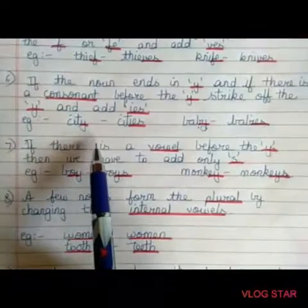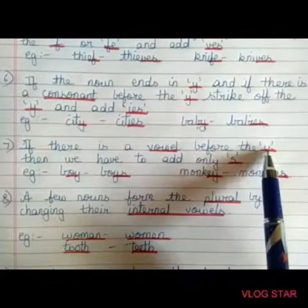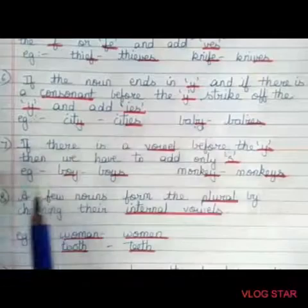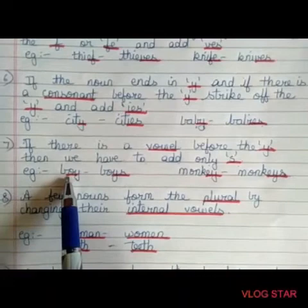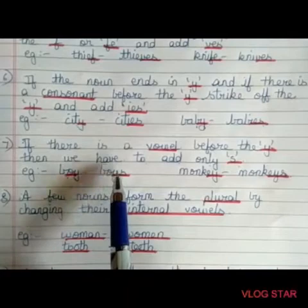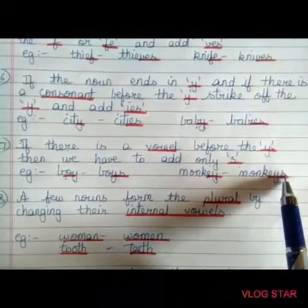Another rule related to 'y': if there is a vowel before the 'y', then we have to add only 's'. Example: boy — there is a vowel 'o' before 'y', so we add only 's'. Second example: monkey — the word ends with 'y' but there is a vowel 'e' before 'y', so we add only 's' to turn it into a plural form.